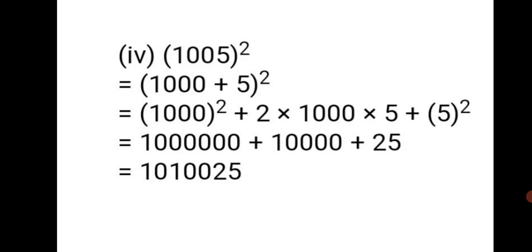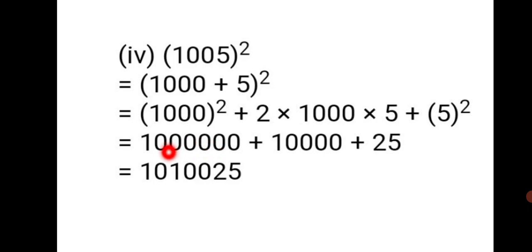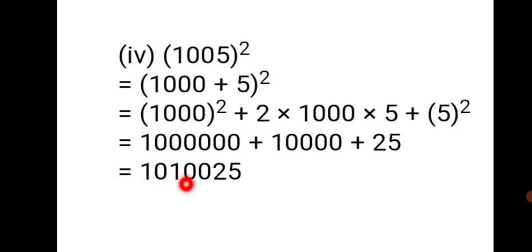Fourth sum: 1005². We write it as (1000 + 5)². Applying (a+b)²: 1000² + 2×1000×5 + 5² = 10,00,000 + 10,000 + 25 = 10,10,025.